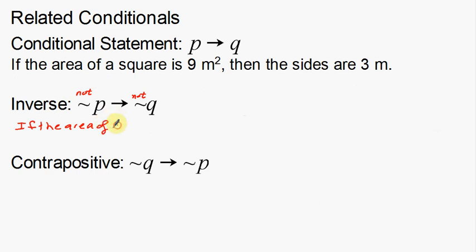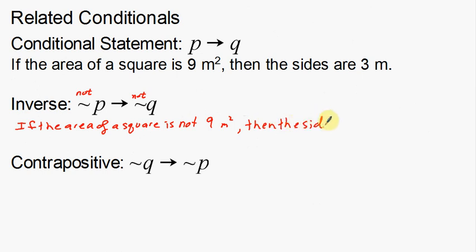So the inverse is: if the area of a square is not 9 meters squared, then the sides are not 3 meters. As you read through that sentence you might think, wait — is that true or not true? That's not what we're worried about right now. We're not worried about whether it's true or false, or the validity — we're just writing it down.